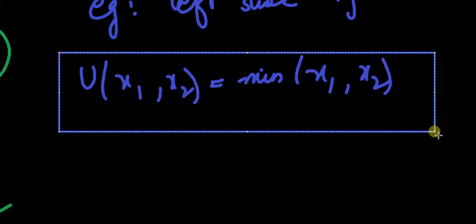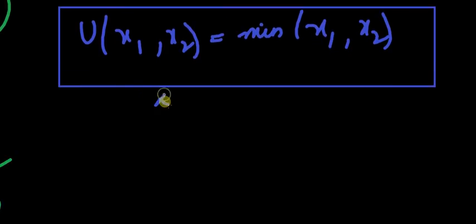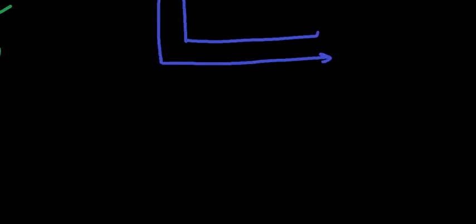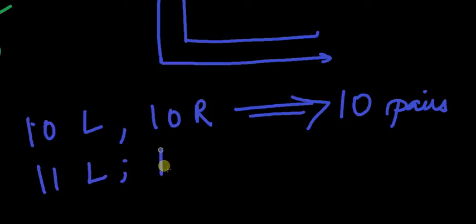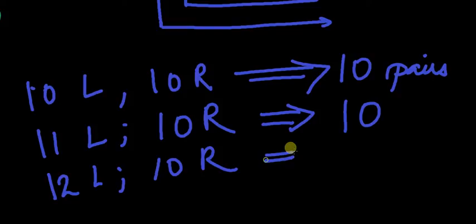The utility function is defined as a minimum function. Here is why: suppose I have 10 left shoes and 10 right shoes — I can make 10 pairs. Now suppose I have 11 left shoes and 10 right shoes — I can still only make 10 pairs. And with 12 left shoes and 10 right shoes, I can still only make 10 pairs.